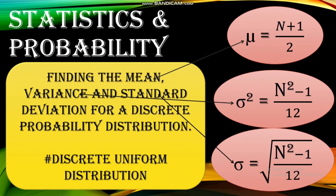Hello everyone, welcome to mathematics tutorial. Today we will discuss how to find the mean, variance, and standard deviation for a discrete probability distribution. We will use discrete uniform distribution. A random variable has a discrete uniform distribution when all values of the random variable are equally likely — that is, they have equal probabilities.